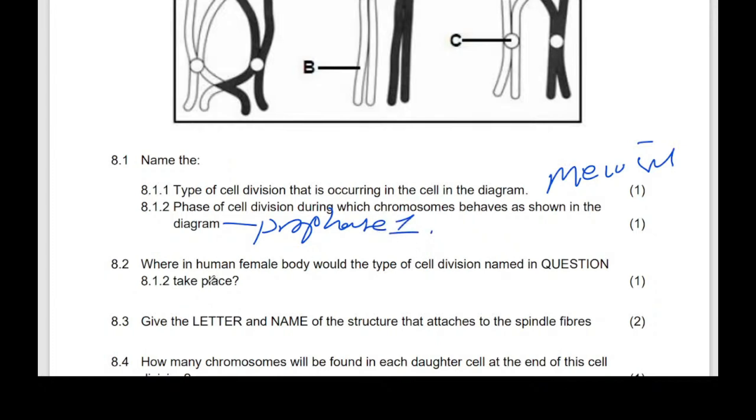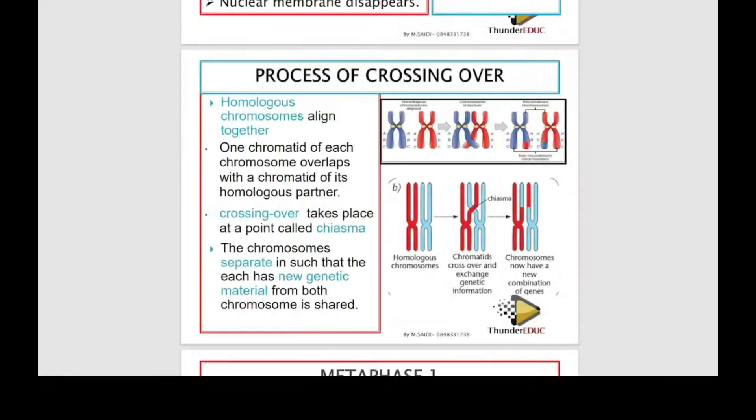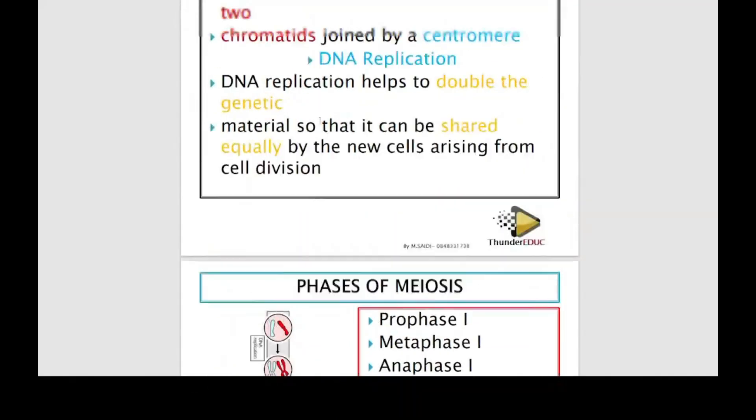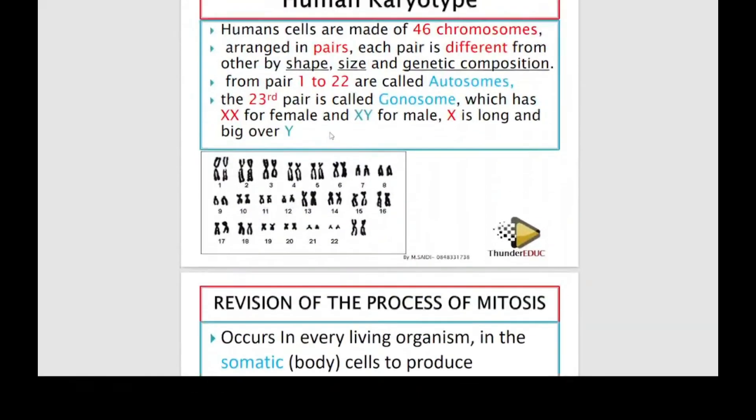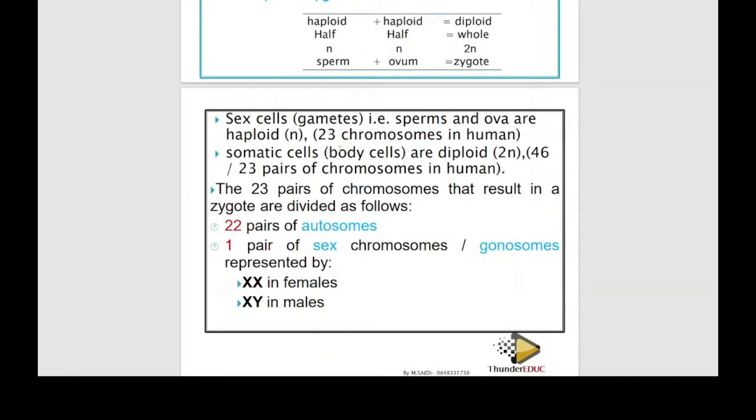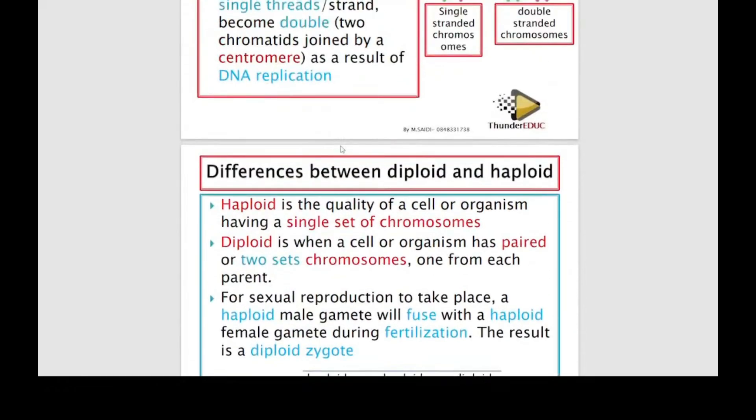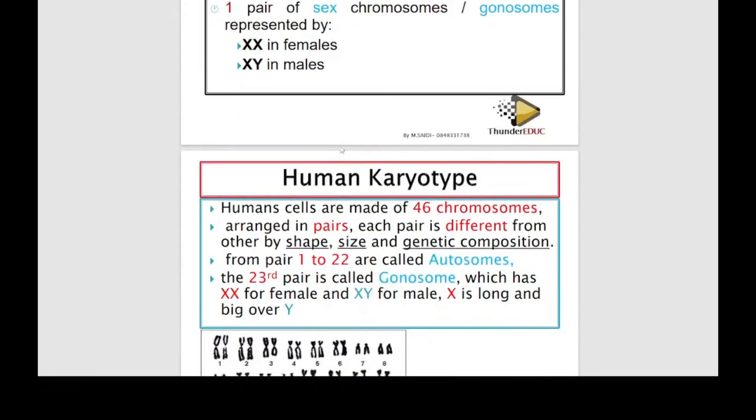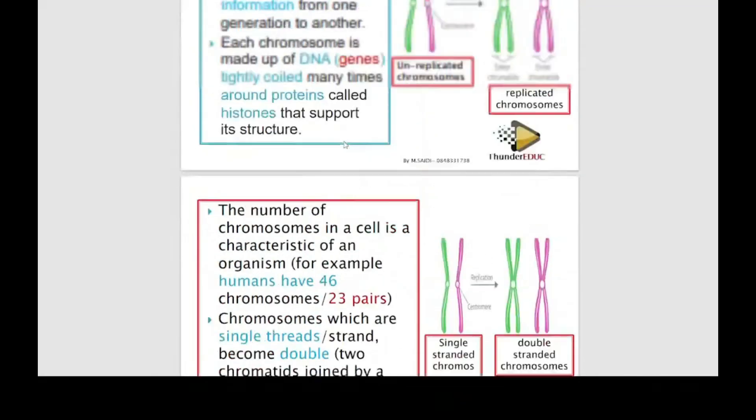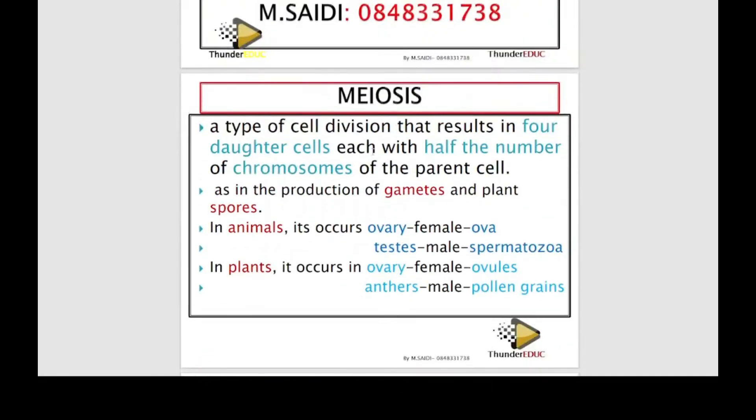Then where in the cell, in human cell, female, would the type of cell division occur? I said it very well. I've been showing you over and over. I told you that there is no question in this they're gonna bring that can't be answered by this booklet, I'm telling you. You want distinction? So the answer is female ovary.